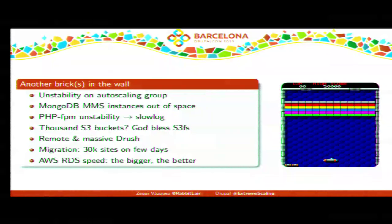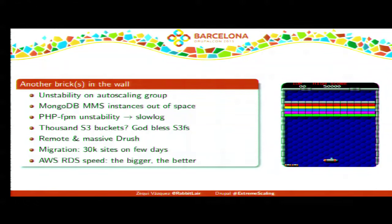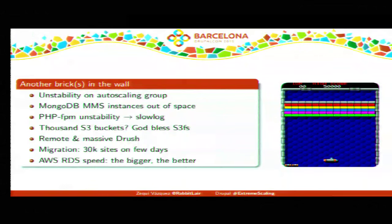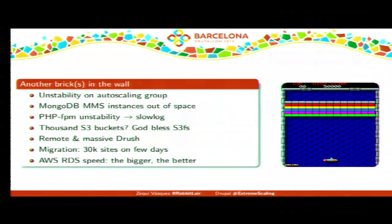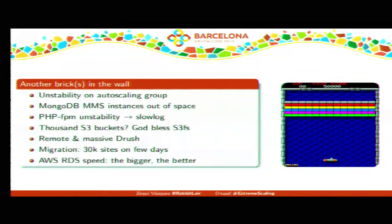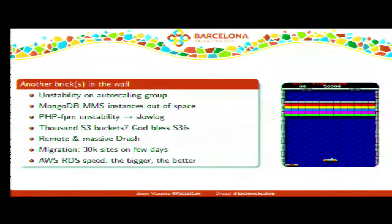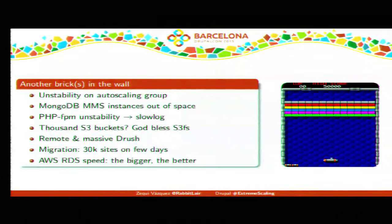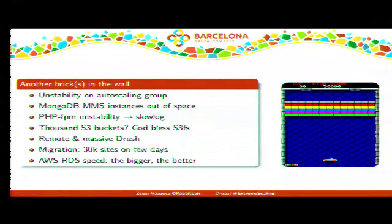MongoDB instances ran out of space. Be careful if you use MongoDB MMS — it creates a replica set of EC2 instances, but the default EBS volume size is only 50 gigabytes. We only realized this when it was too late, and lost about three hours in the middle of migration. We also found some instability with PHP-FPM on certain requests — remember to disable the slow log when using Nginx and PHP-FPM.